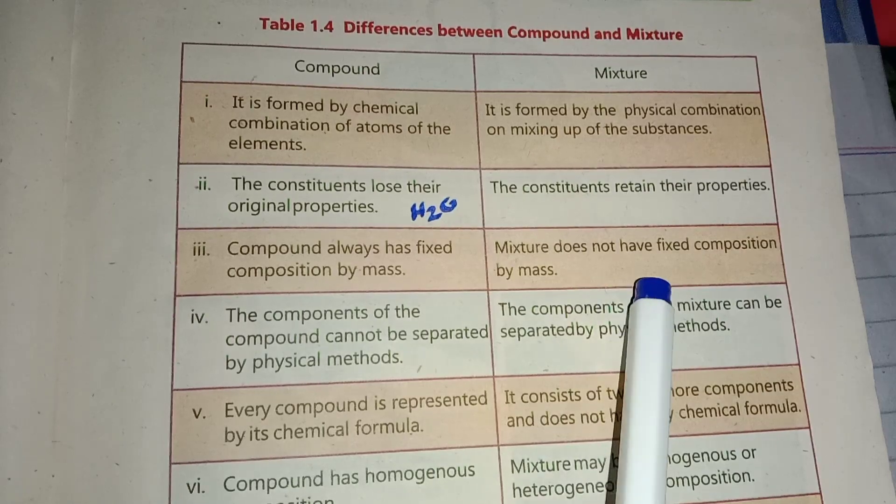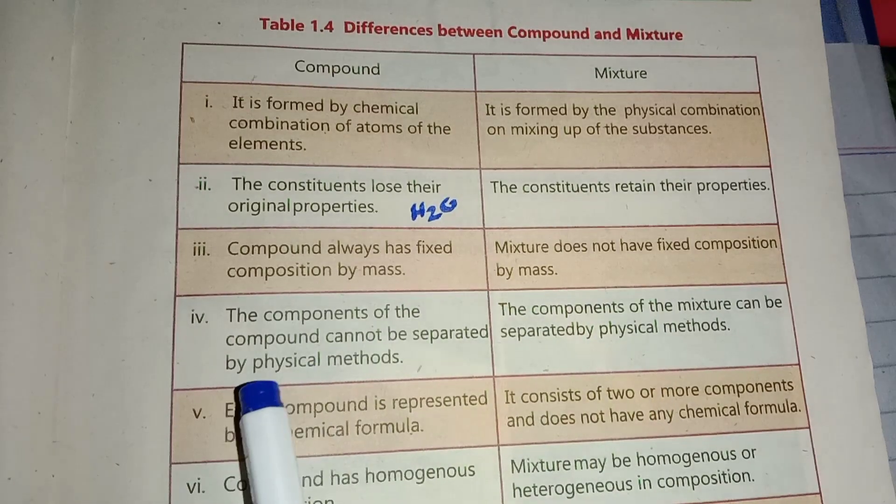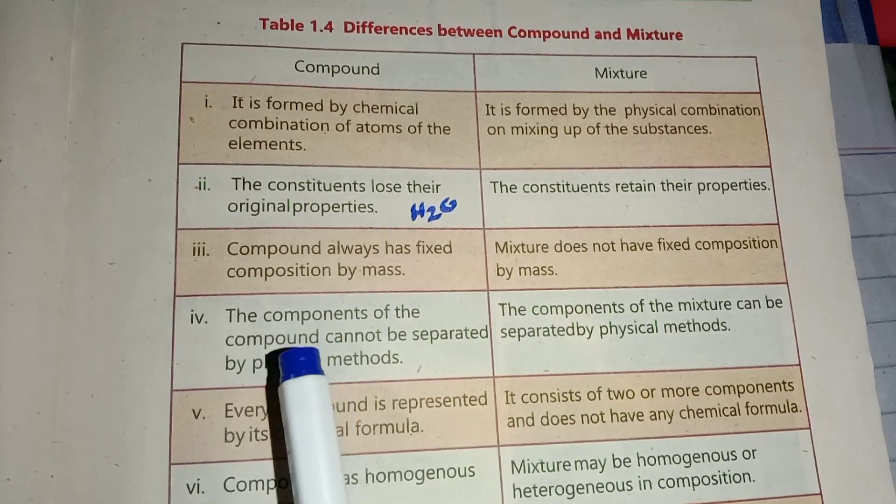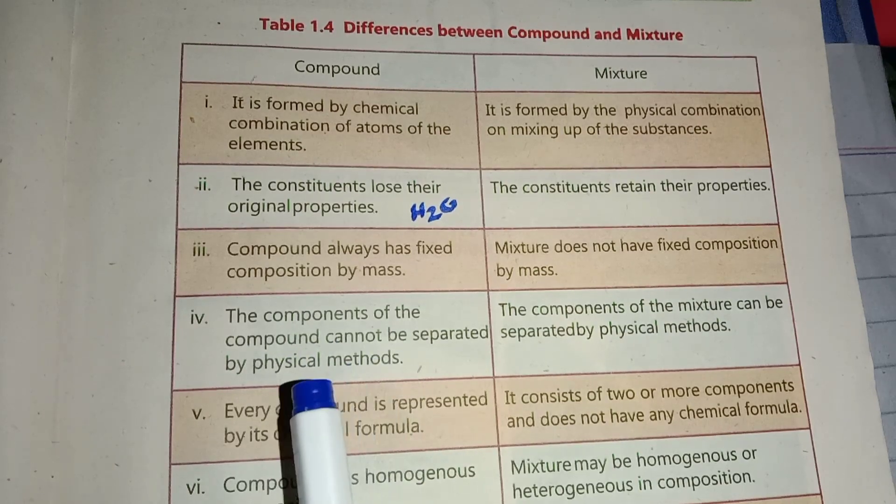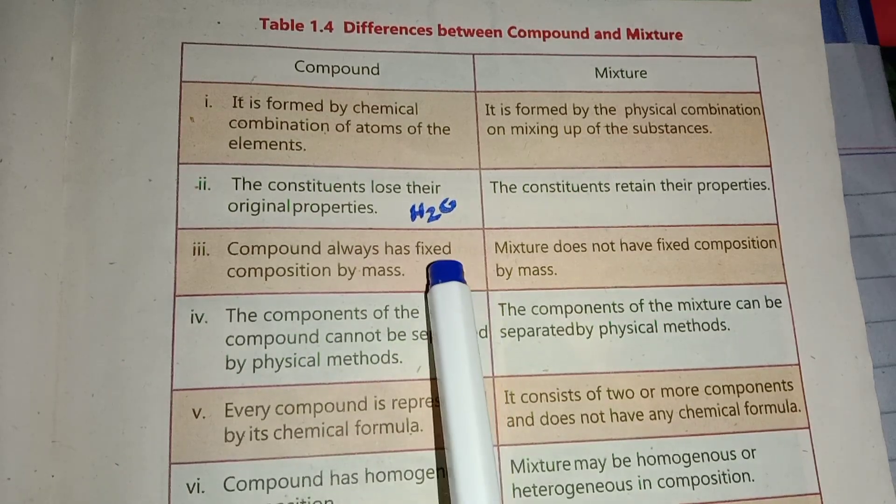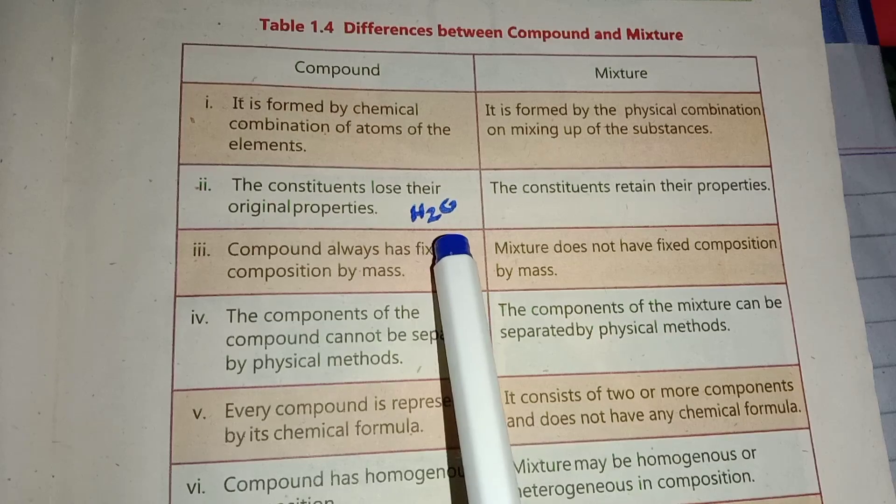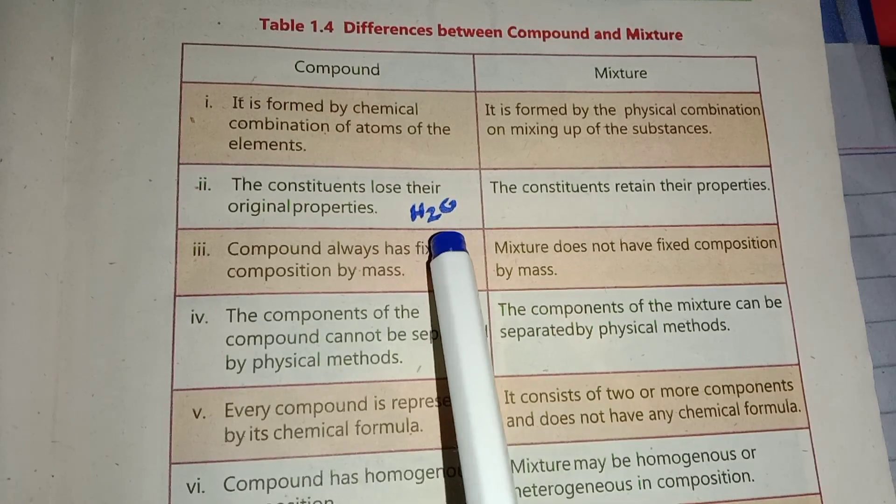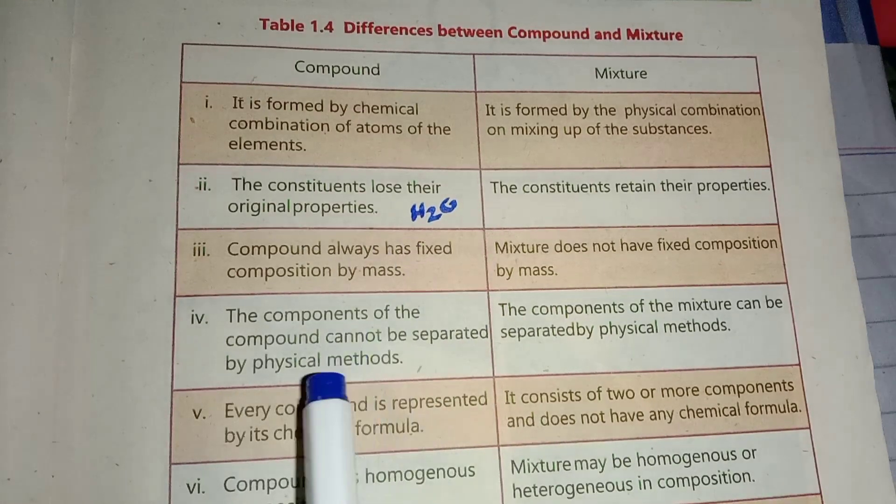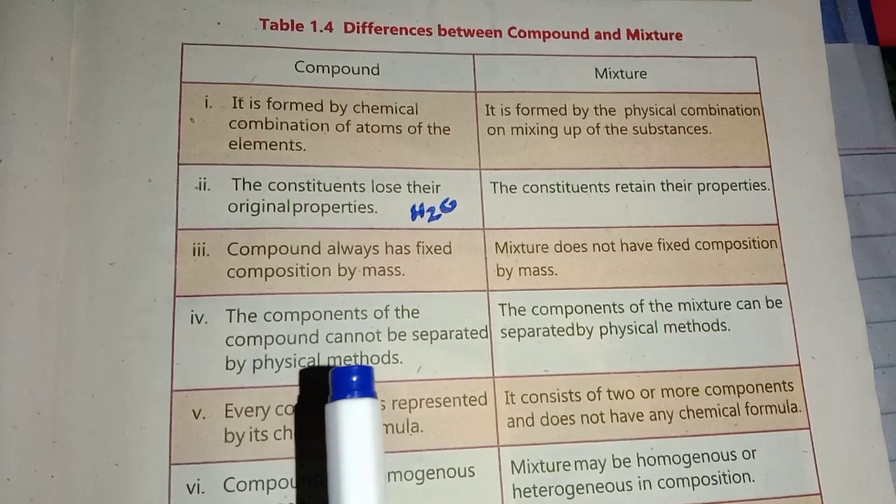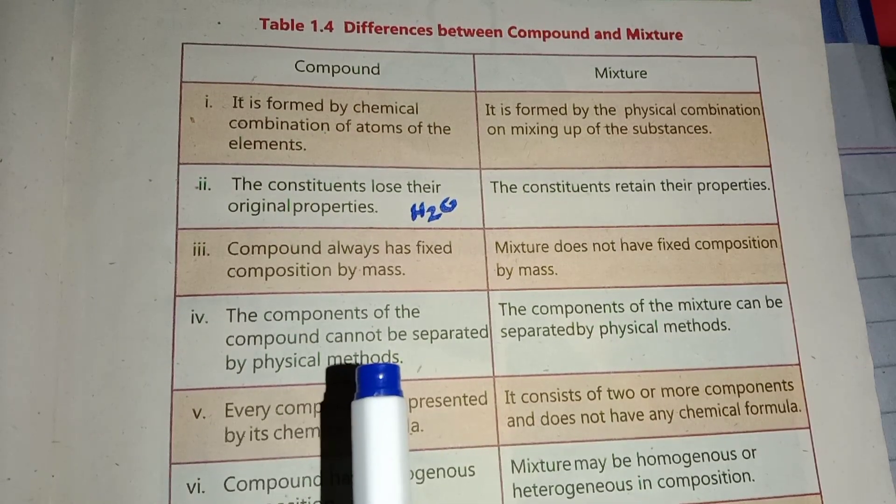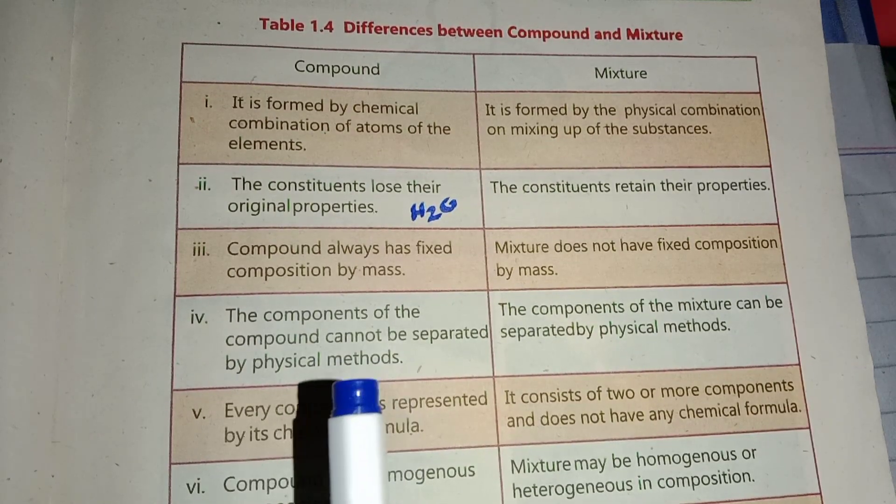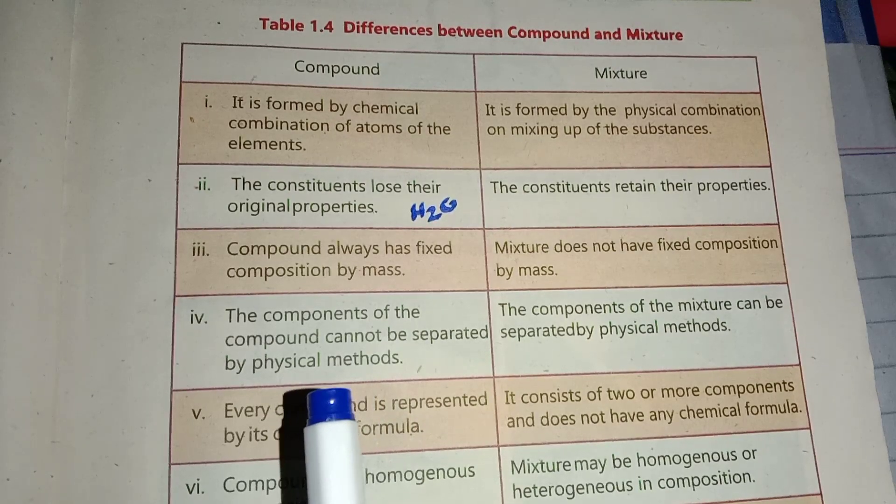Fourth difference: The components of the compound cannot be separated by physical methods. Water cannot be separated into hydrogen and oxygen physically. The components of a mixture can be separated by physical methods.